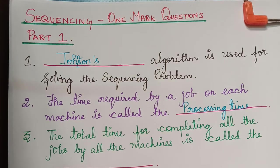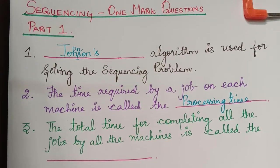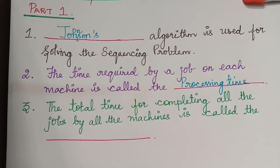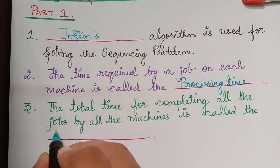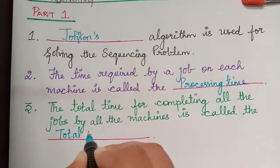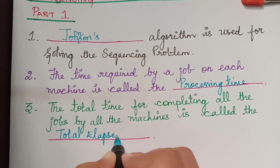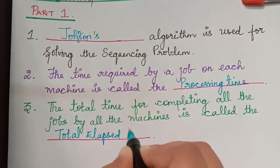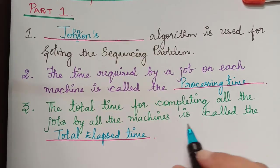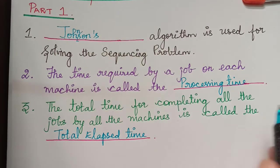The next question is: the total time for completing all the jobs by all the machines is called the total elapsed time. The answer is total elapsed time. This is the time taken for the completion of all the jobs by all the machines.